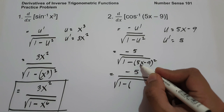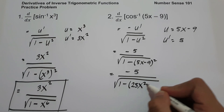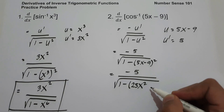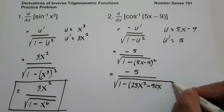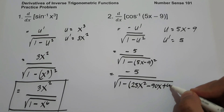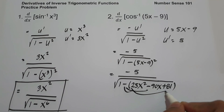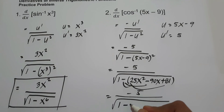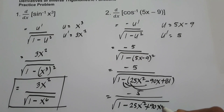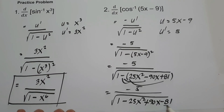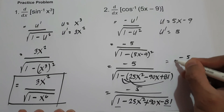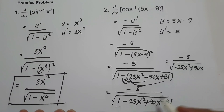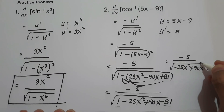Expanding the squared binomial (5x minus 9) squared gives 25x squared minus 90x plus 81. Distributing the negative sign inside the square root gives negative 5 over square root of 1 minus 25x squared plus 90x minus 81. Combining constants, 1 minus 81 gives negative 80. So our final answer is negative 5 over square root of negative 25x squared plus 90x minus 80.